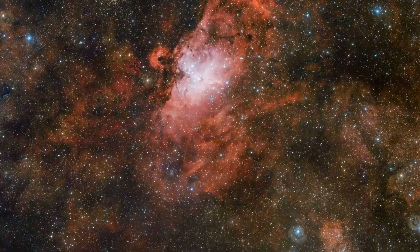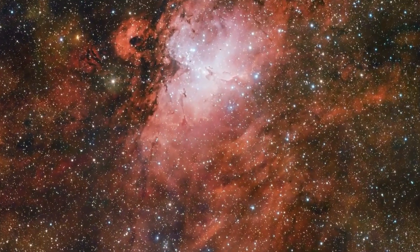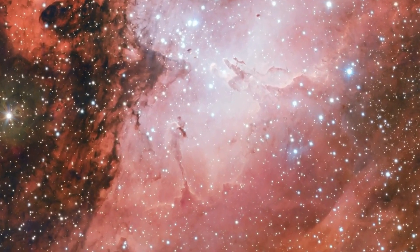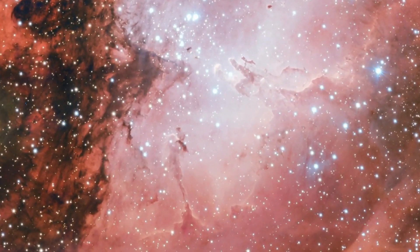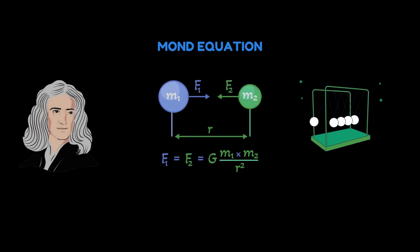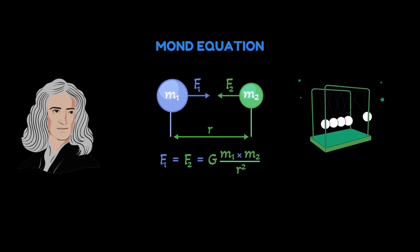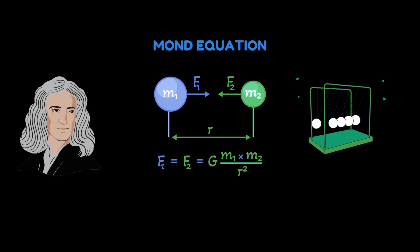Another straightforward explanation is that early universe galaxies might have had little to no dust, which would have made them appear brighter. The disputable concept of modified Newtonian dynamics, or MOND, may also be supported by the Webb observations.